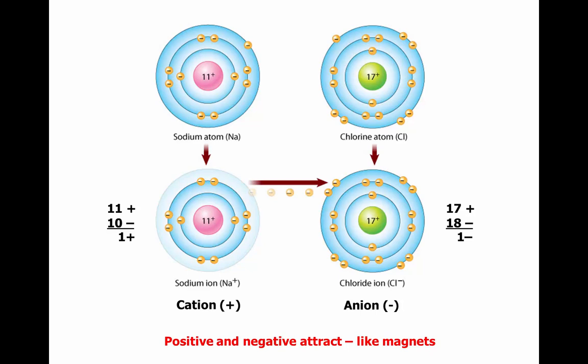We now say these atoms are ions. Sodium is a positively charged ion — a cation — because it still retains its 11 protons in the nucleus but now only has 10 electrons, giving it an extra positive charge.